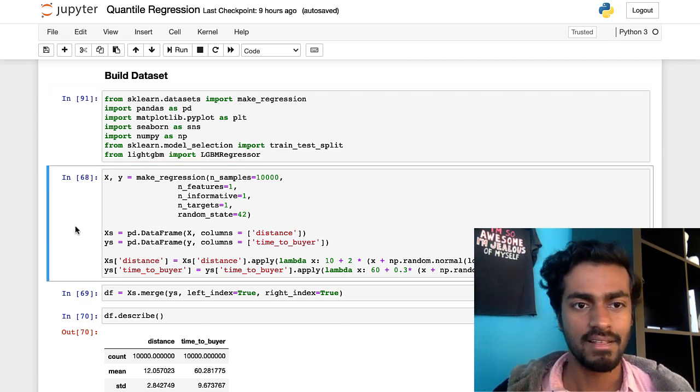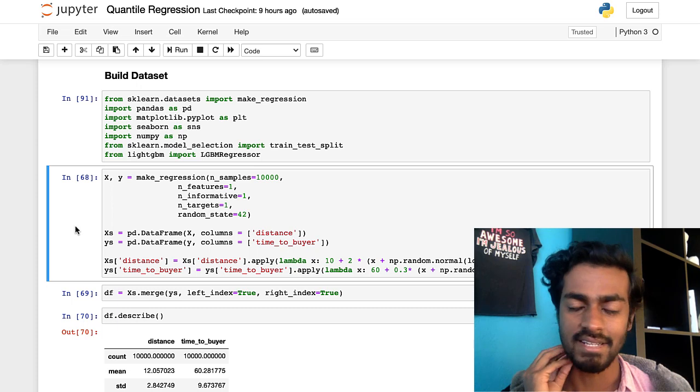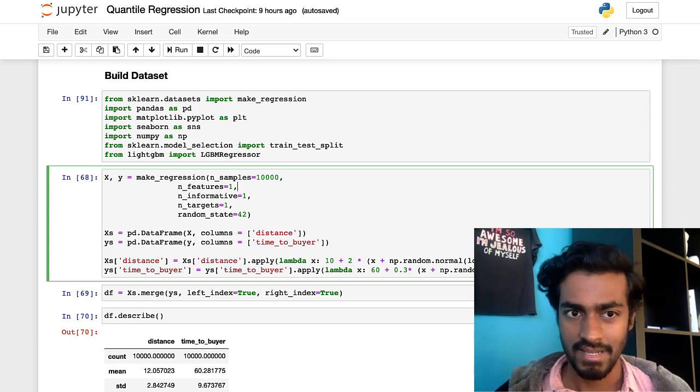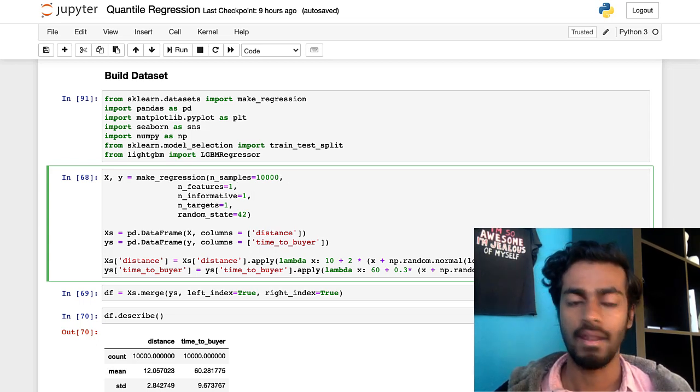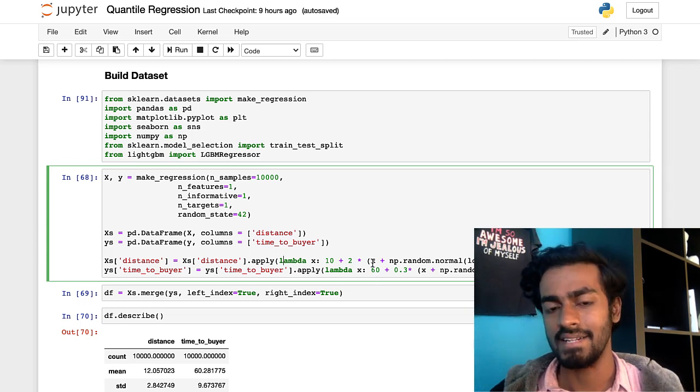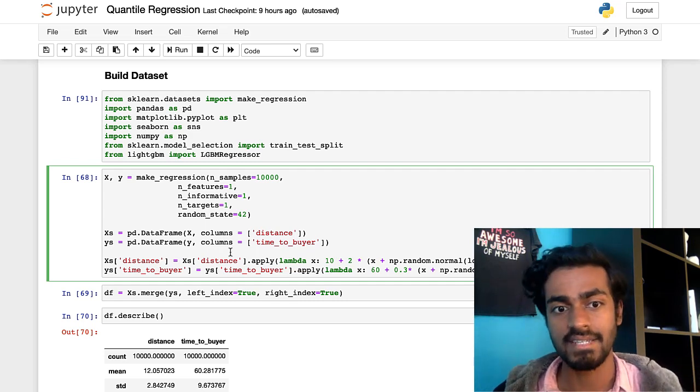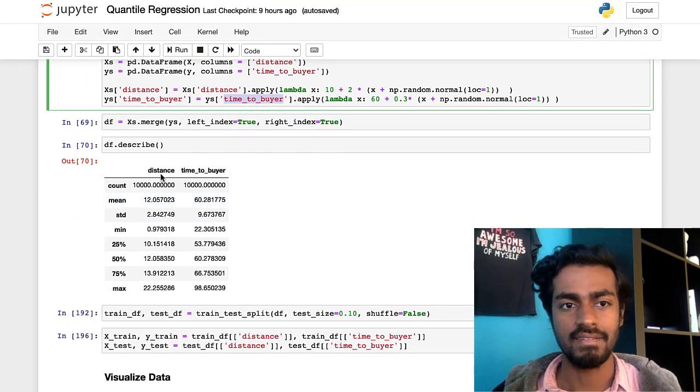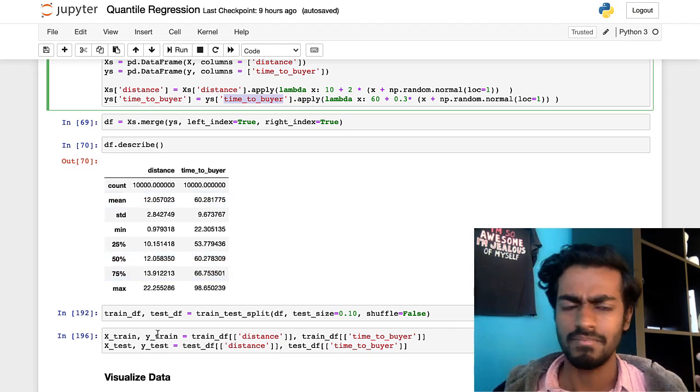Now this chunk of cell is basically for us to make the data set. I didn't get this data set from anywhere, just making it on my own and tweaking it. So we have 10,000 examples with one feature that's the distance and that feature is informative and I'm just saying like a random state is 42 just to kind of set the value there. And right here the data frame, I'm just converting it to data frames and what we're doing is I'm kind of adding some noise and then trying to shift the mean and standard deviation so that it becomes actually representative of like a distance in terms of miles or like the time to buyer in terms of minutes.